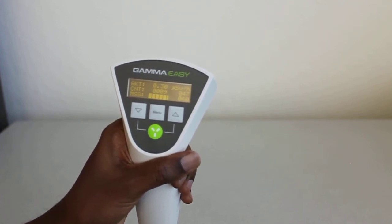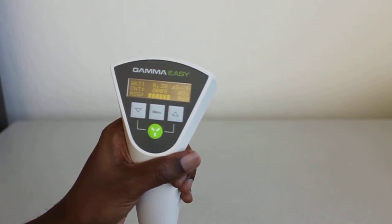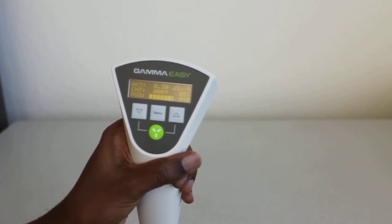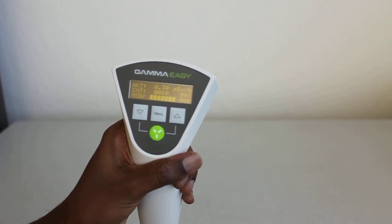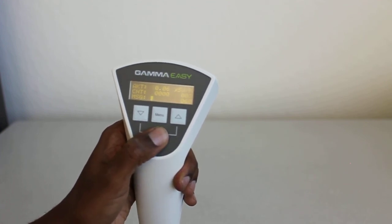That pretty much goes through the basic functions for the Gamma Easy. We'll have another video talking about the advanced functions, and we'll also have another video with some radioactive samples so you can actually see it in action. I'm going to turn this off and we'll see you the next video.